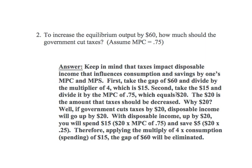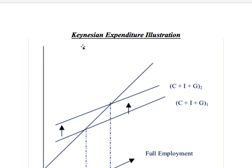So there are two ways, according to the Keynesian approach, to address a recessionary gap: increase government spending, or cut government taxes. If we had an inflationary gap, it would be the opposite — cut government spending and increase taxes — but the approach would be exactly the same. Hopefully this video helps you understand the Keynesian expenditure approach to government spending and taxation. Thank you.